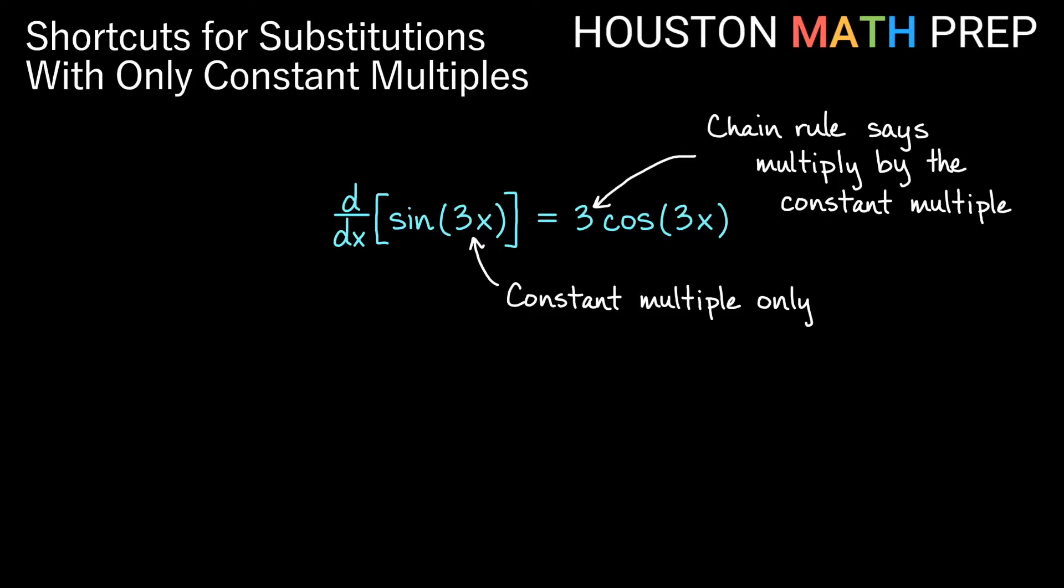The chain rule is just giving us times 3 because the only thing being done to x inside was multiplied by a constant. So we get that constant multiple on the outside from the chain rule.